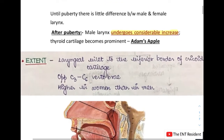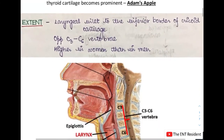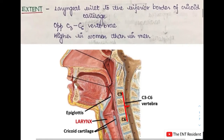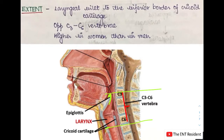Next we will head over to the extent of larynx. The larynx extends from the inferior border of the cricoid cartilage to the upper limit of the laryngeal inlet. The upper limit is at the level of the laryngeal inlet and the lower limit is at the level of the cricoid cartilage, lying opposite the C3 to C6 vertebra. One very interesting fact is that the larynx lies higher in women than in men.